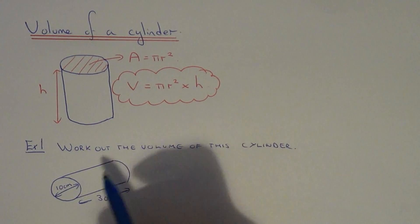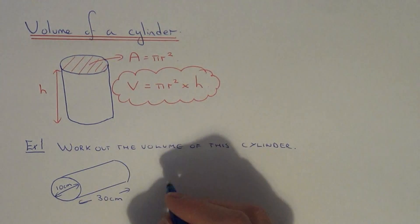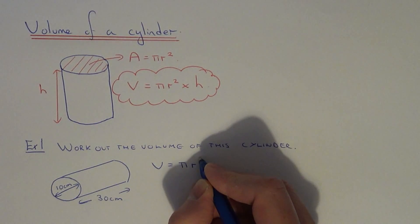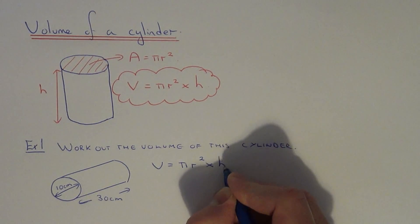So we have to substitute the radius and the height into this formula here. So let's just copy the formula down one more time. So it's V equals pi r squared times by the height.